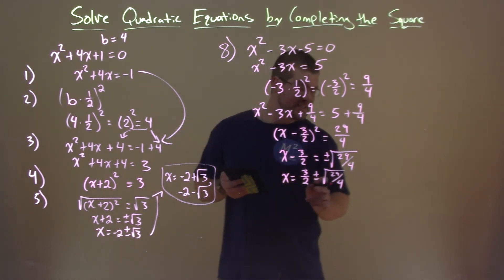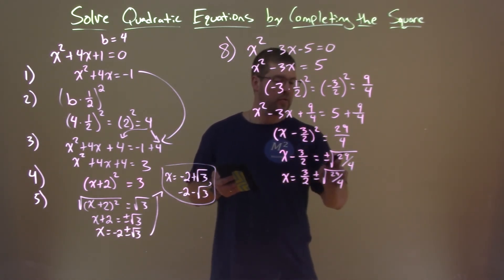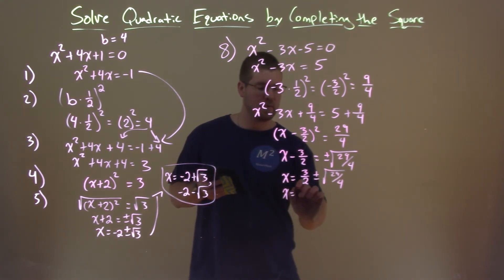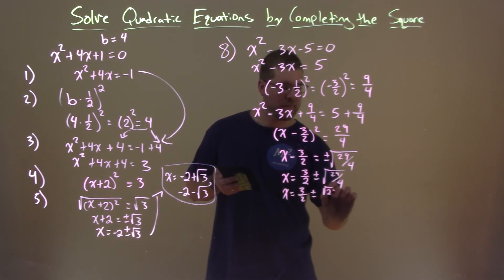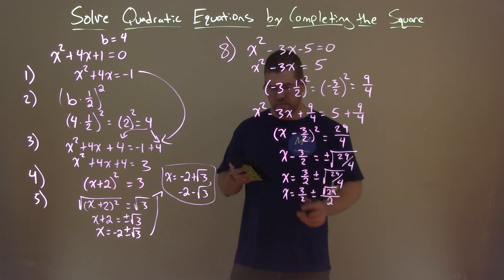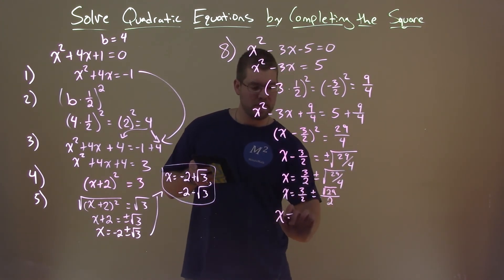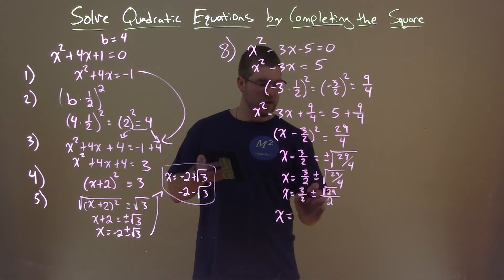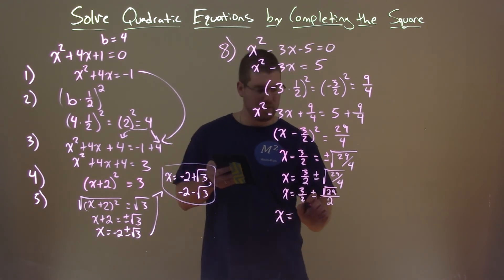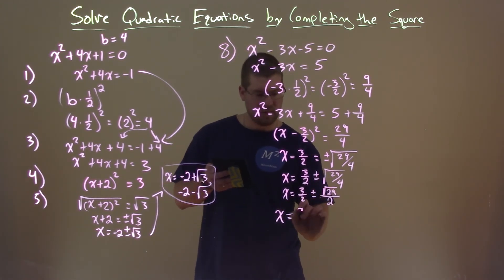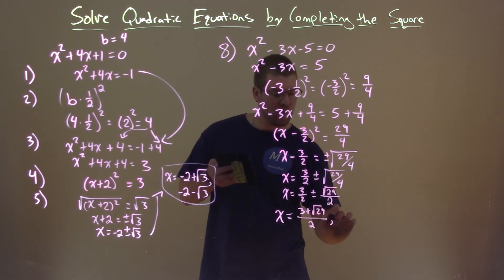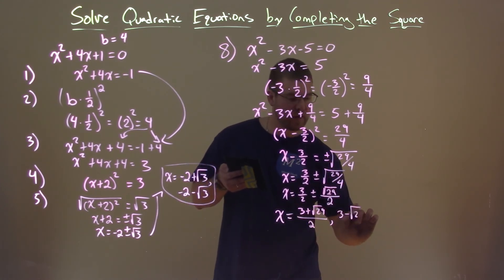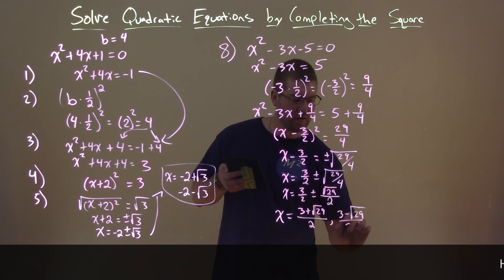We can still keep simplifying. The square root of 29 over 4 simplifies because the square root of 4 is 2. So x equals 3 halves plus or minus the square root of 29 over 2. Our two solutions, since they have the same denominator, are written as: 3 plus square root of 29 all over 2, or 3 minus square root of 29 all over 2.